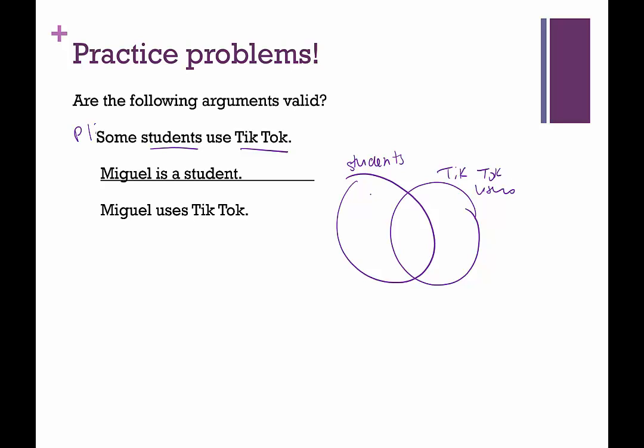Then it says Miguel is a student, so Miguel could be here, or Miguel could be here. Can we logically conclude that Miguel uses TikTok? No, we cannot, because maybe Miguel is one of the students who does not. This argument is invalid.